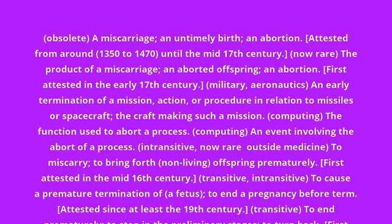Intransitive, biology: to become checked in normal development so as either to remain rudimentary or shrink away wholly, to cease organic growth before maturation, to become sterile. First attested in the mid-19th century. Intransitive, biology: to cause an organism to develop minimally, to cause rudimentary development to happen, to prevent maturation. First attested in the mid-19th century.